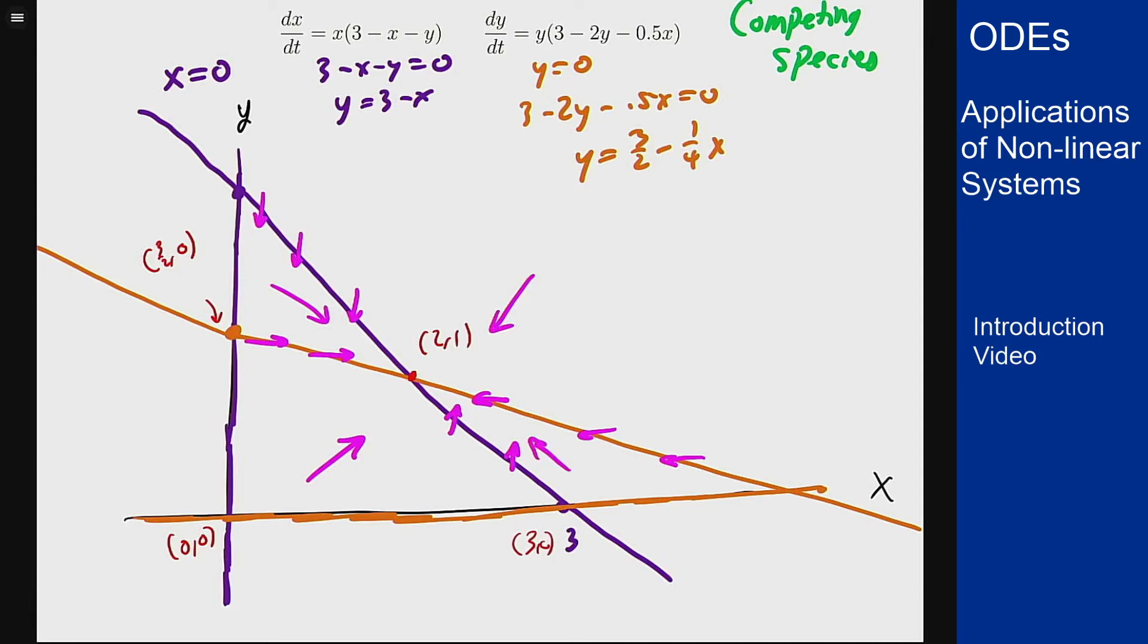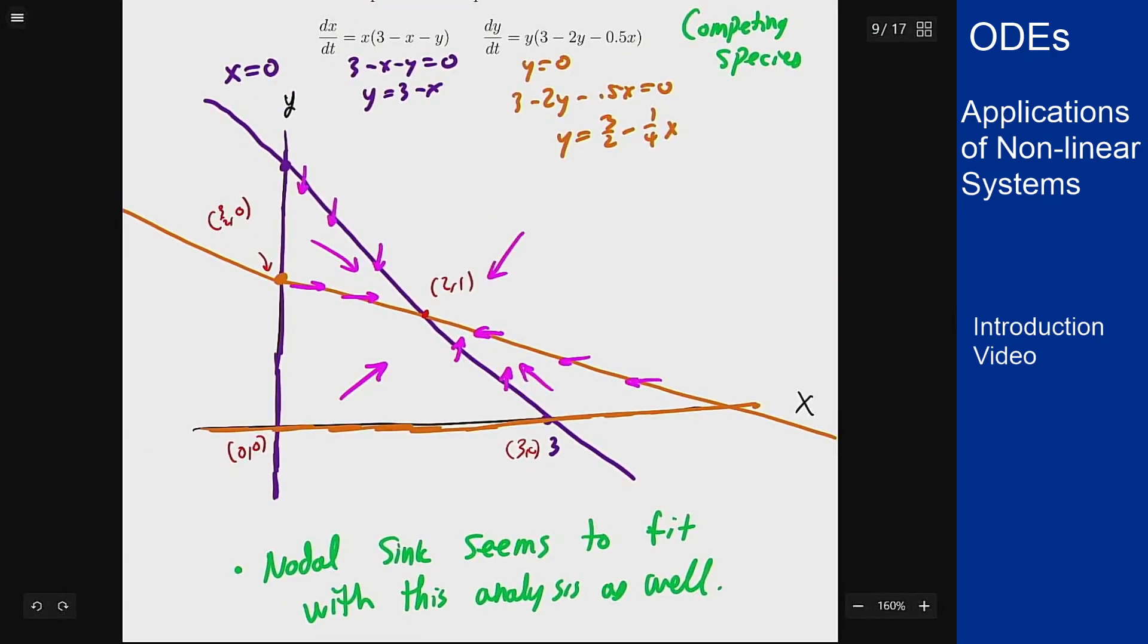So the fact that we got a nodal sink out of this makes sense. Everything from all sides is pointing in towards that point. So the idea of the nodal sink here seems to fit with this analysis as well. You would want to confirm that it was actually a nodal sink based on the equation linearization, but it fits with the picture of the fact that everything should seem to point in towards the center as this develops.